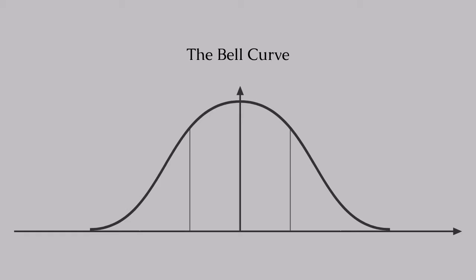The bell curve, also known as a Gaussian distribution or the normal distribution, is a fundamental concept in statistics. But what is it really? Take a look at this graph — a smooth, symmetrical curve peaking in the center and gently tapering off on either side. That's our bell.